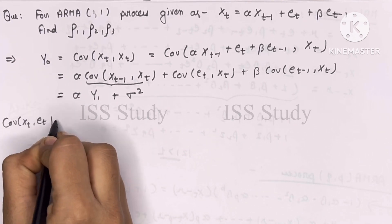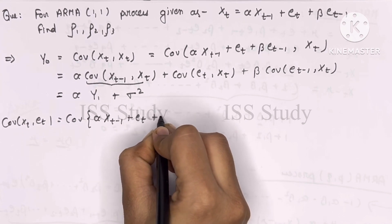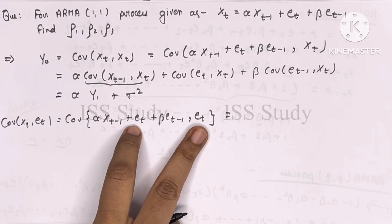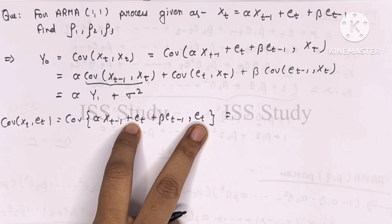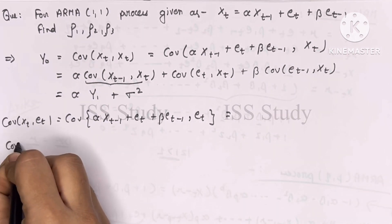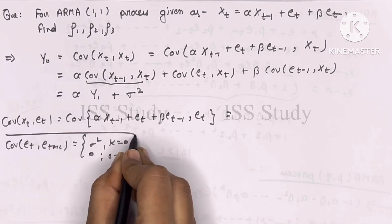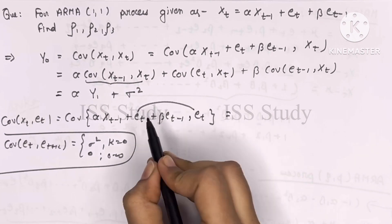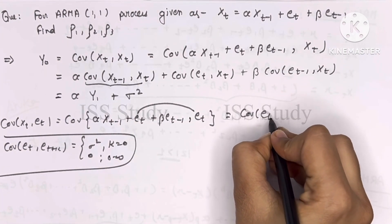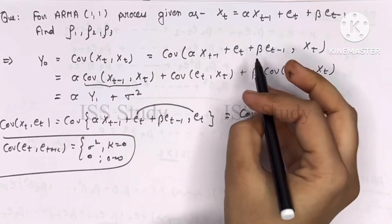To verify: Cov(X_t, epsilon_t) — substituting X_t as alpha*X_{t-1} plus epsilon_t plus beta*epsilon_{t-1} — only the epsilon_t and epsilon_t term has lag 0, giving sigma^2. All other terms have non-zero lag and give 0, using the property that Cov(epsilon_t, epsilon_{t+k}) equals sigma^2 when k=0, and 0 otherwise.